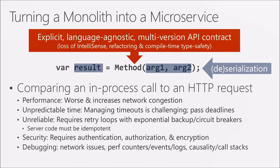If you're doing retries, it's possible the server did receive the request and is processing it, but your client-side code timed out. If you retry, you might be sending the same thing twice — so you have to make sure the server code is idempotent to ensure there's no ill effect if it performs the same operation twice. These are all very challenging things to get right when building a microservice.